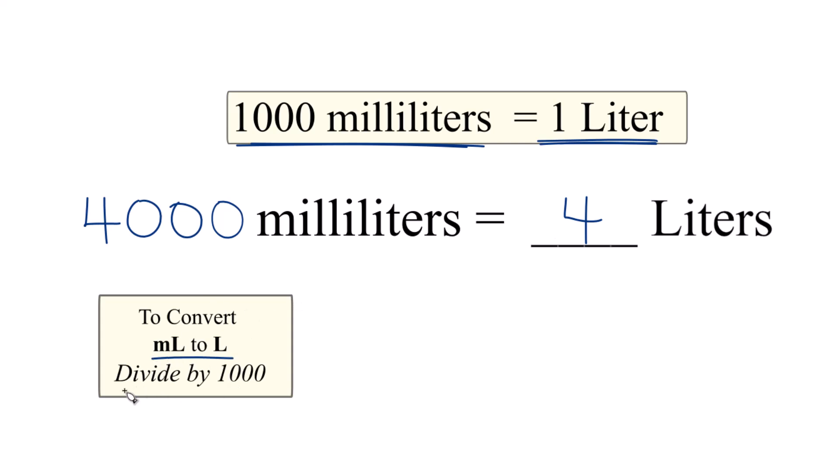When we convert from milliliters to liters, we just divide our milliliters by 1,000. So we have 4,000 milliliters, and we're going to divide that by 1,000.